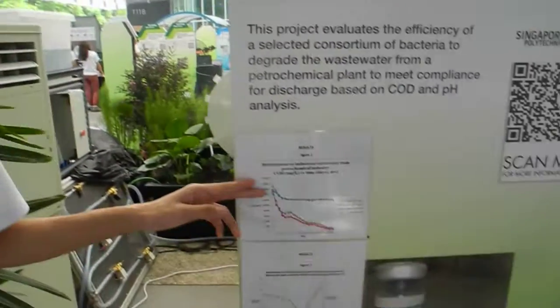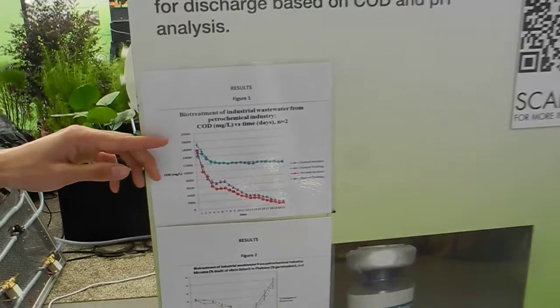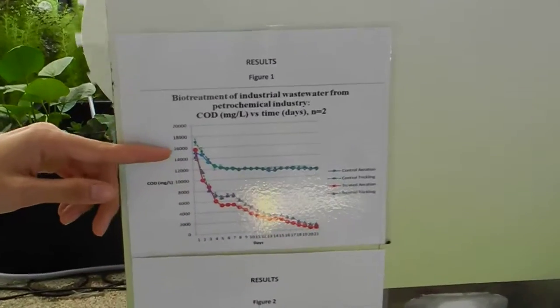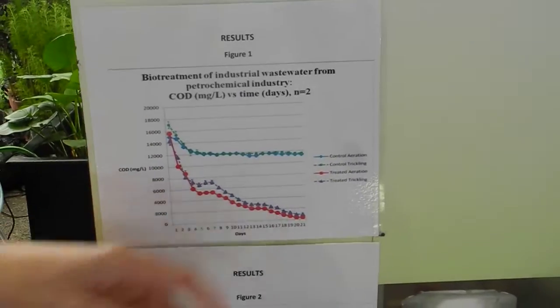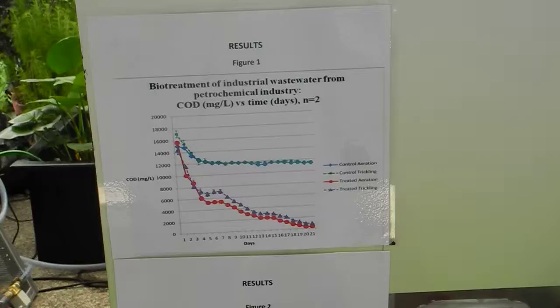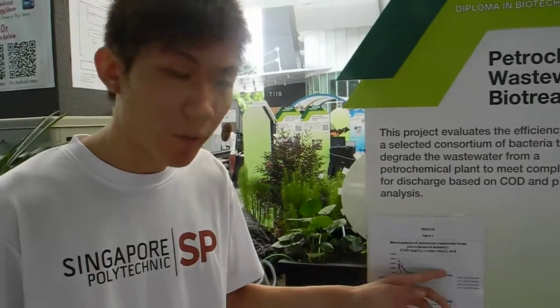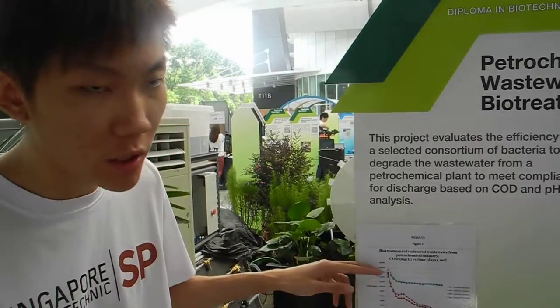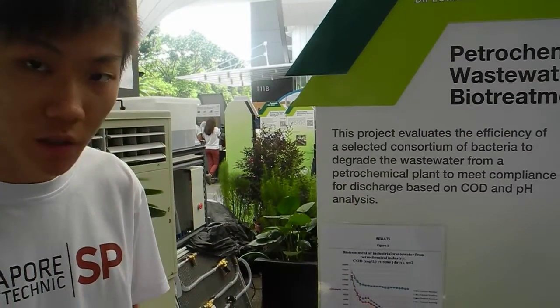We can see from the graph that we managed to reduce the COD from 17,000 down to below 500, which is the acceptable level by Singapore PUB standard. Whereas without the inoculation of bacteria, we only managed to decrease it by 2,000, which is not acceptable.